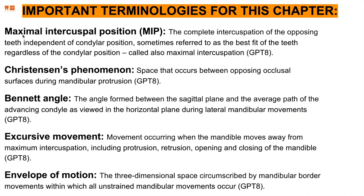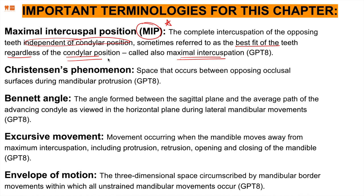More definitions. Maximal intercuspation position, MIP: it's the complete intercuspation and interocclusion of the opposing teeth independent of condylar position. It is sometimes referred to as the best fit for teeth regardless of condylar position, also known as maximum intercuspation — when your teeth are completely in biting position to the maximum of their capacity, regardless of where the condyle is.